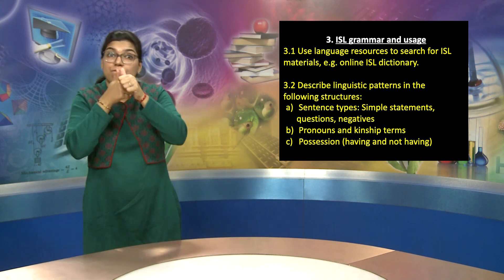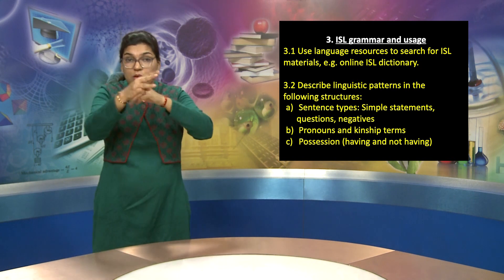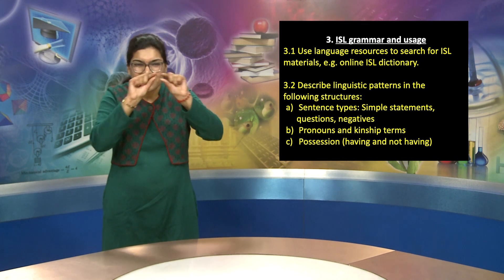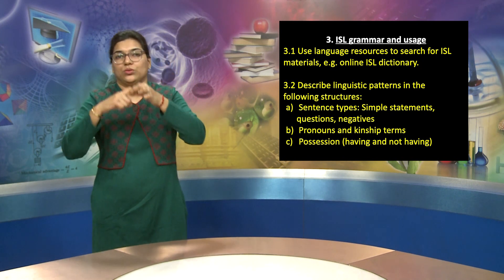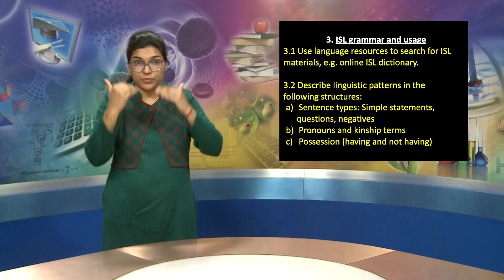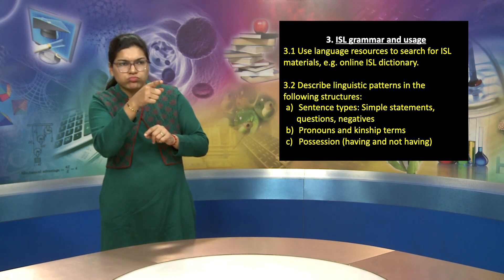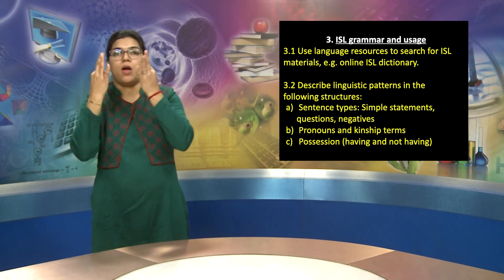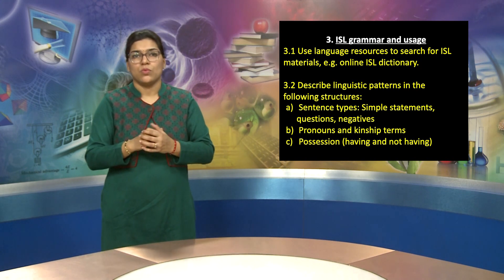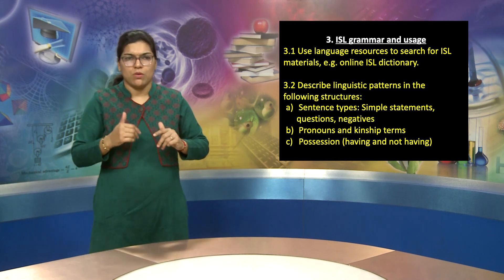3.2 Describe linguistic patterns in the following structures: Option A — sentence types: simple statements, questions, and negatives. Option B — pronouns and kinship terms. Option C — possession: having and not having.